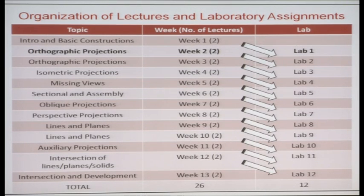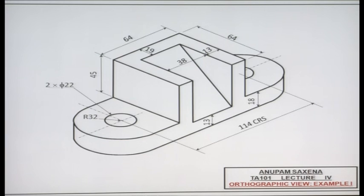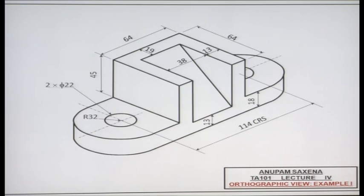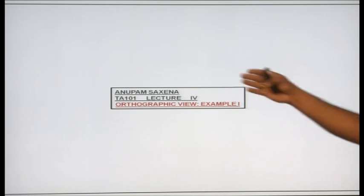Orthographic projections is the fourth lecture, second week. Let us take an example. We have to draw the orthographic views of the solid, dimensions of which are given. The first step: preparing your sheet, write your name, write your subject what you are working on. Give all the details in the title box over here, and this is the convention we use for the third angle orthographic view.